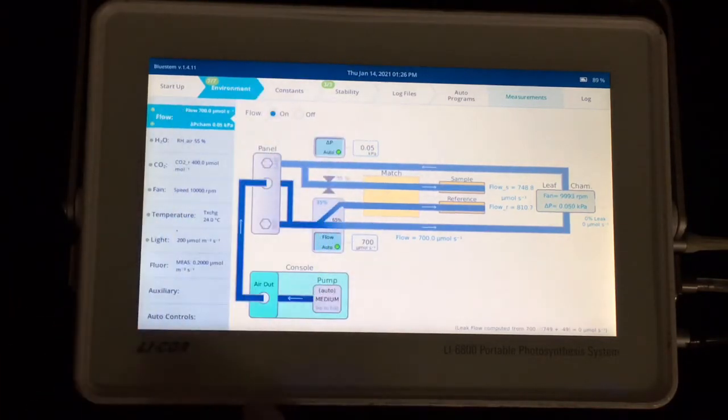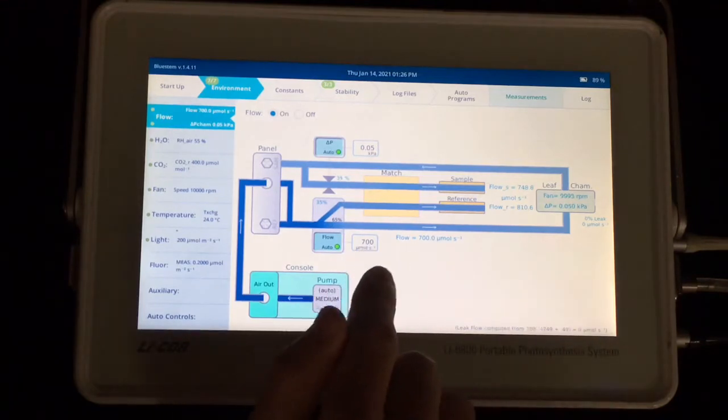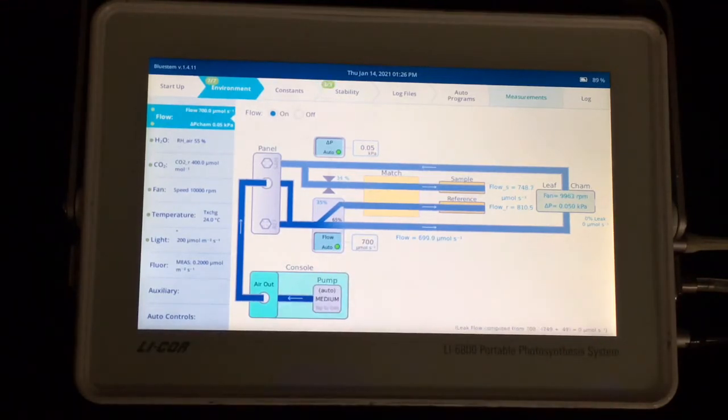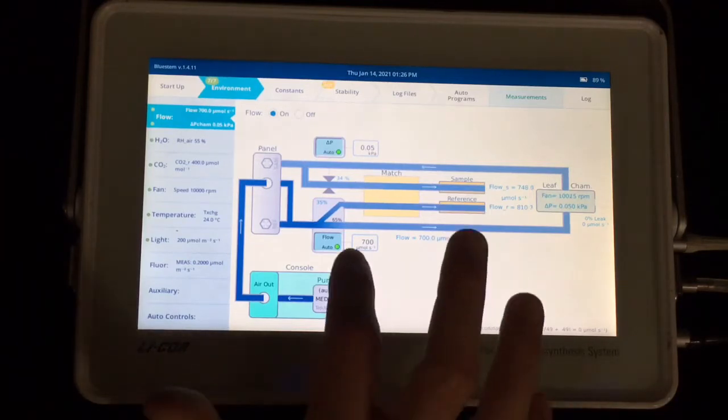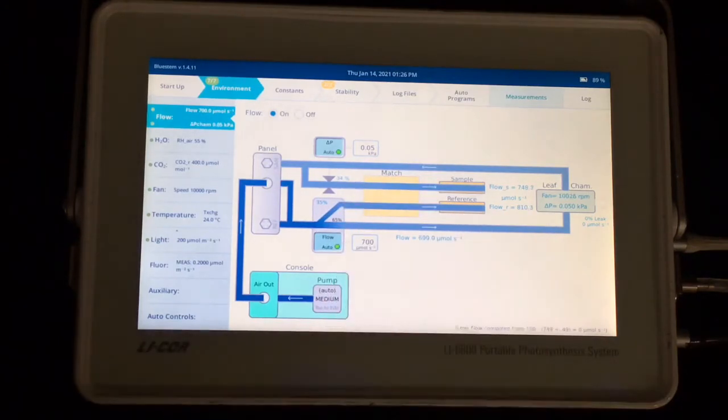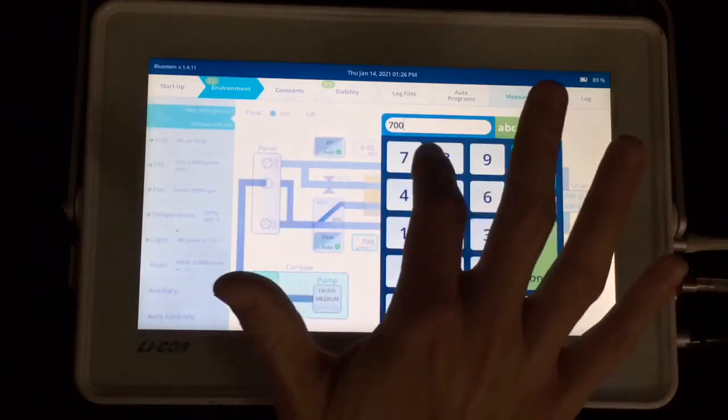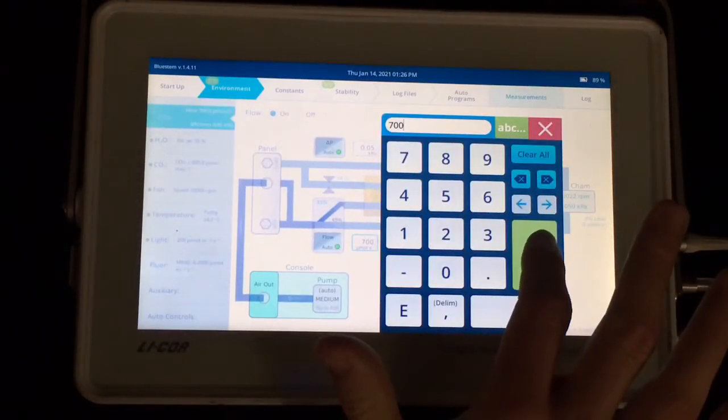And so the first thing we'll want to choose is a flow rate to our sample cuvette. And for a survey measurement, we would typically recommend being on the higher end of the flow rates. And that will act to flush the chamber more quickly, since you're going to be repeatedly opening and closing the chamber. The faster you can flush that sample volume, the more quickly your measurement will go. And so with the fluorometer chamber on the higher end of typical flow rates is about 700. So that's what I would choose. And you set that with this box here. I already had it set, but I'll just go ahead and reset that flow rate.